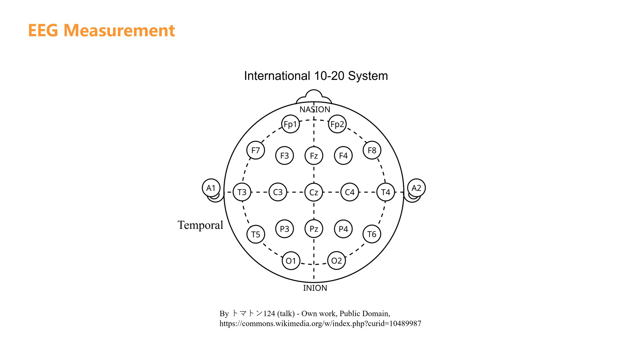This is where the International 10-20 system comes into play. The International 10-20 system is a method of electrode placement based on the anatomical features of the head, widely used in EEG measurement.